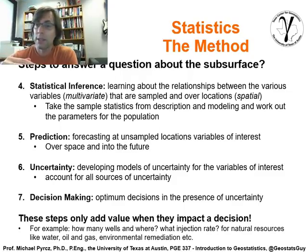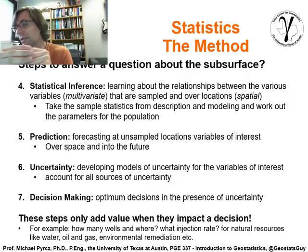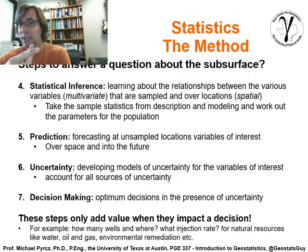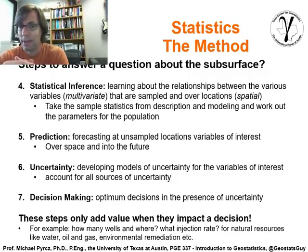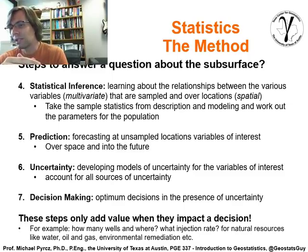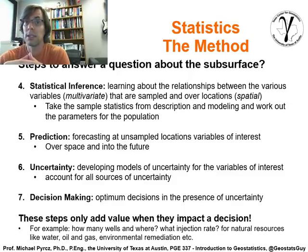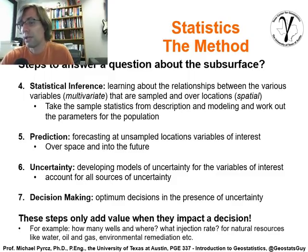Step number five is prediction — we're trying to forecast at unsampled locations. This could be over space — spatial or temporal. We could be looking at what could happen in the future, specifically for dealing with flow simulation. Step number six is developing models of uncertainty. We'll have a separate video on subsurface uncertainty in detail. We'll try to develop a model of uncertainty for the variables of interest and account for all different sources of uncertainty.